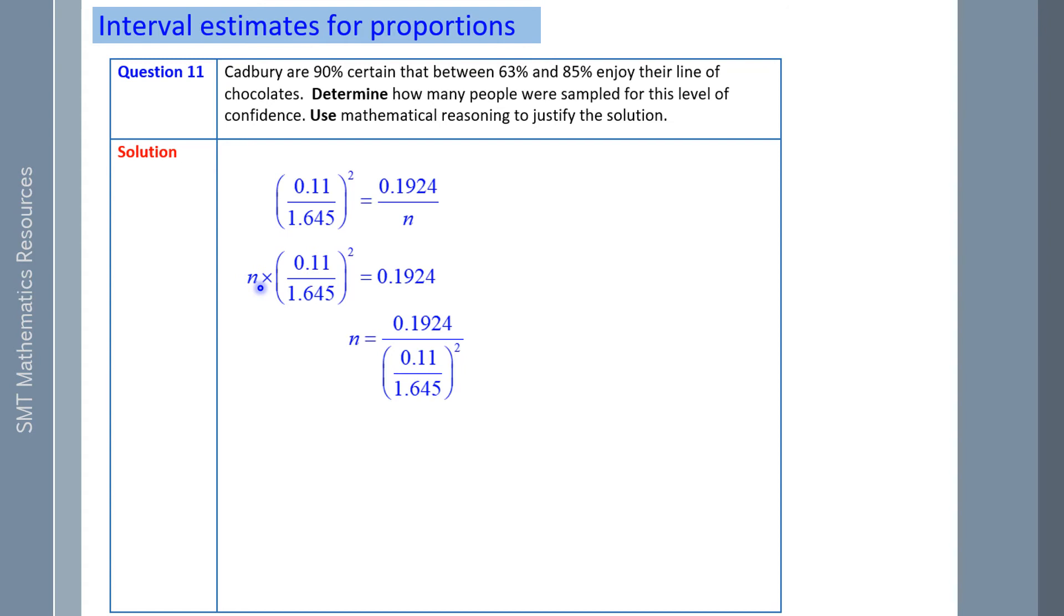Next, I can multiply both sides by N. And then I'm going to divide by this to get N or isolate N. Now applying that, working it out in a calculator or evaluating it, N is 43.028. So to be certain here, about 43 people have been sampled to provide that level of confidence.